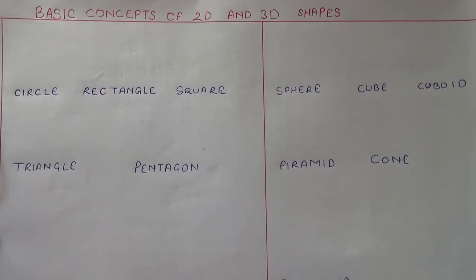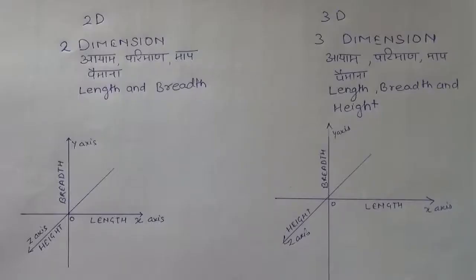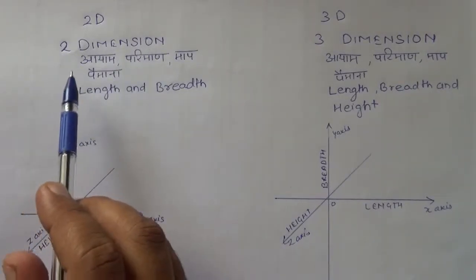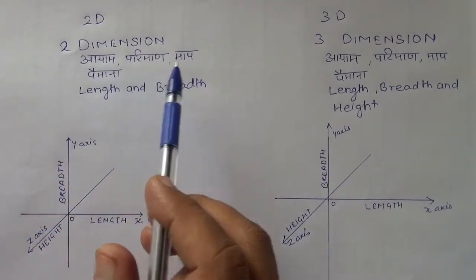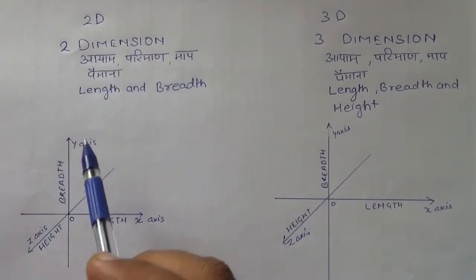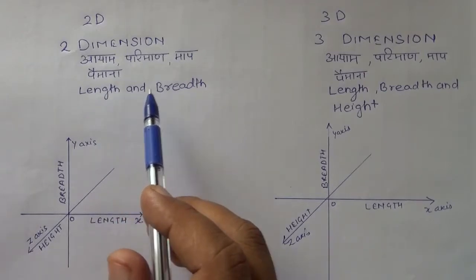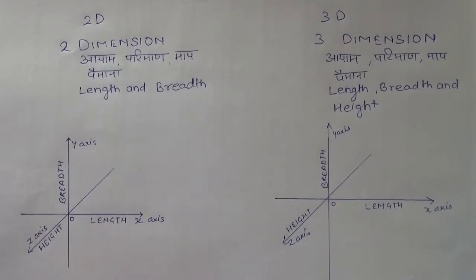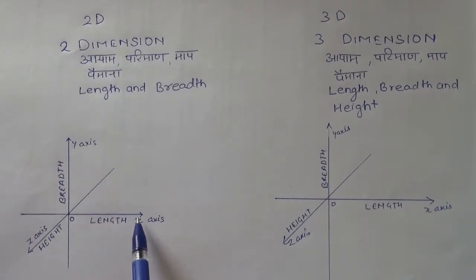Basic concepts of 2D and 3D shapes. 2D means two dimensions. Dimension means length and breadth — a shape must have length and breadth. Dimension can also be explained by this figure: x-axis, y-axis, z-axis.